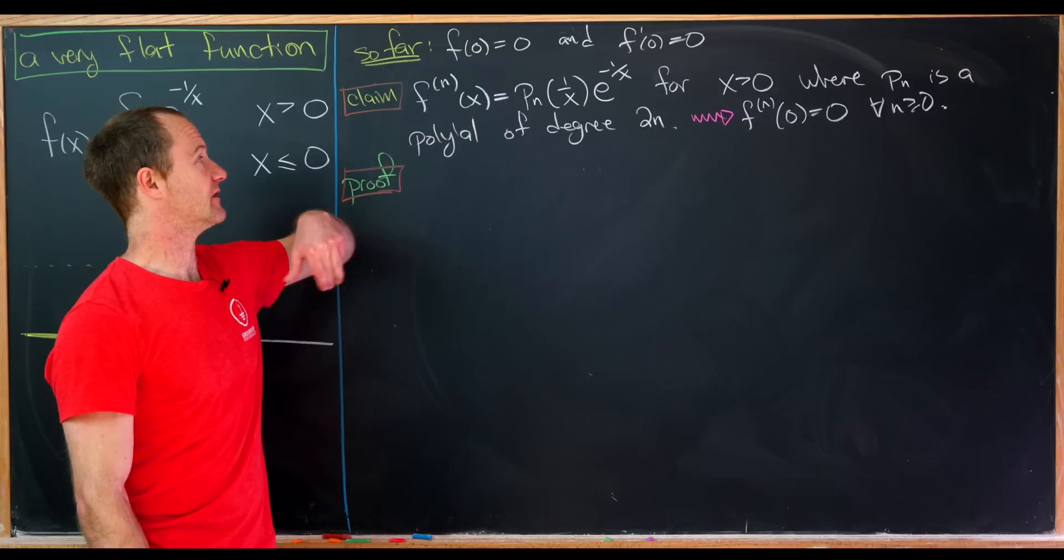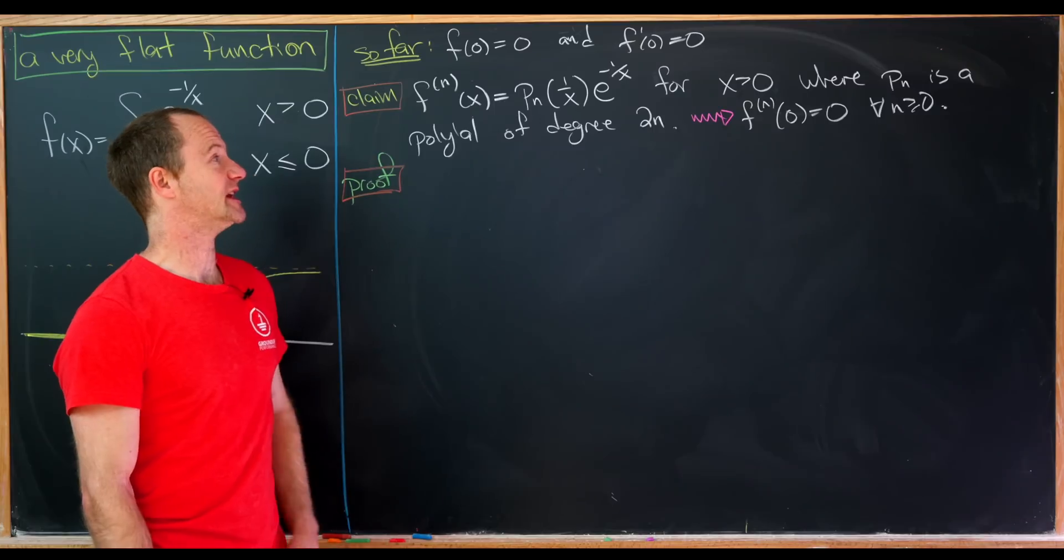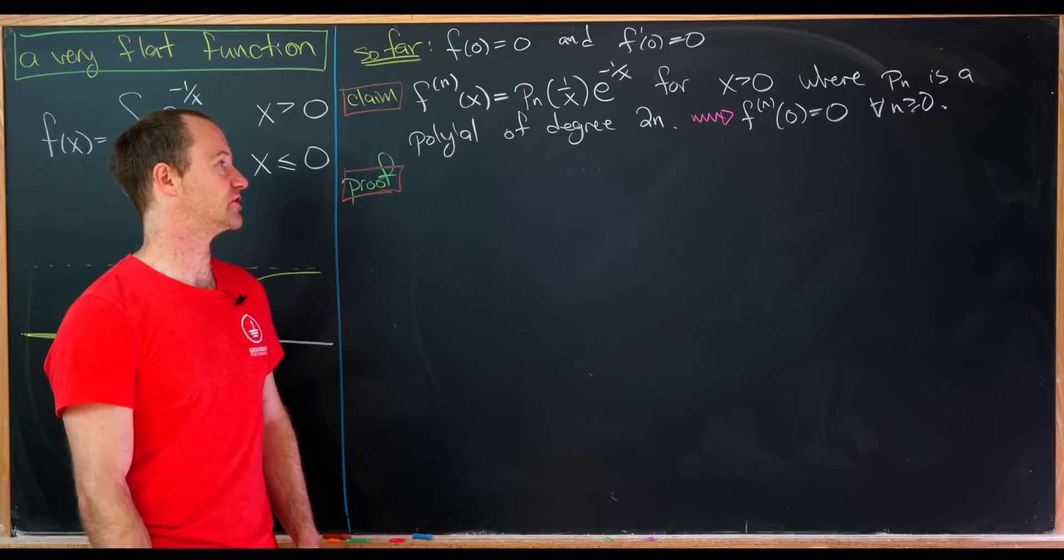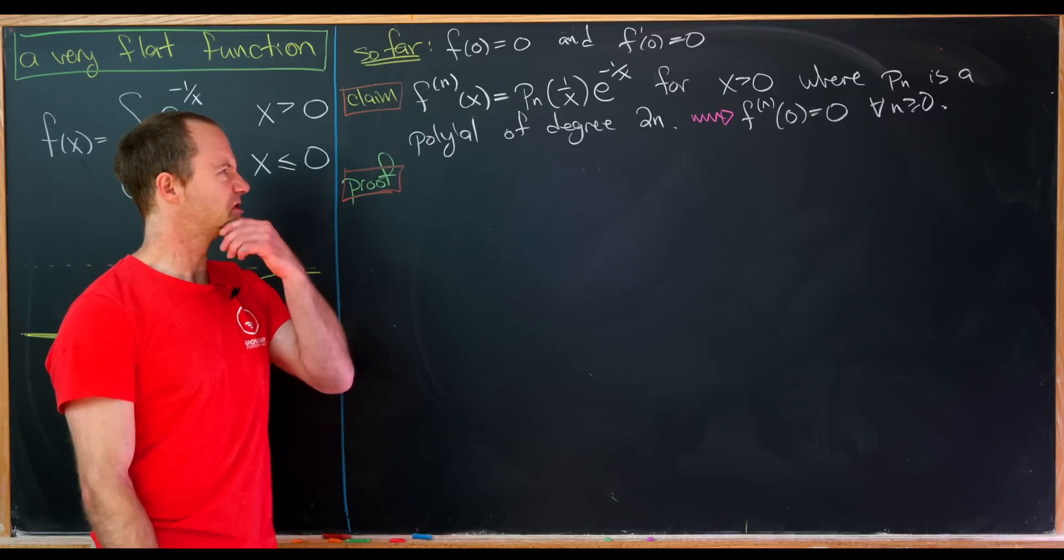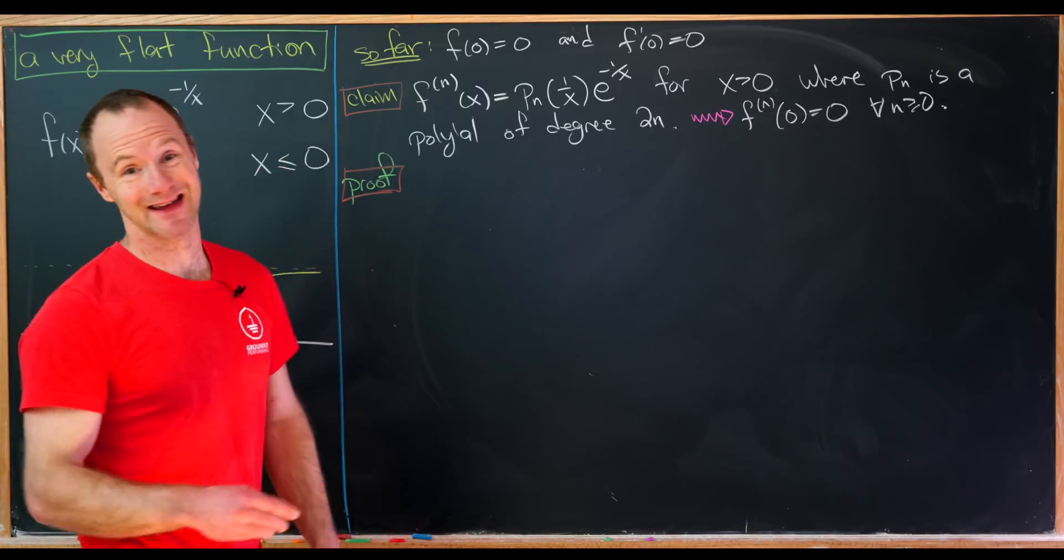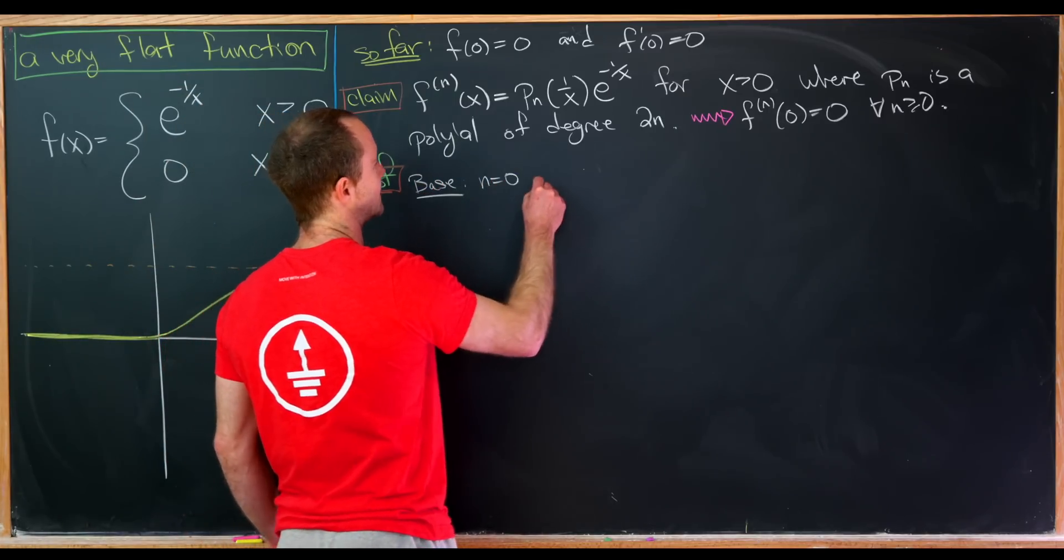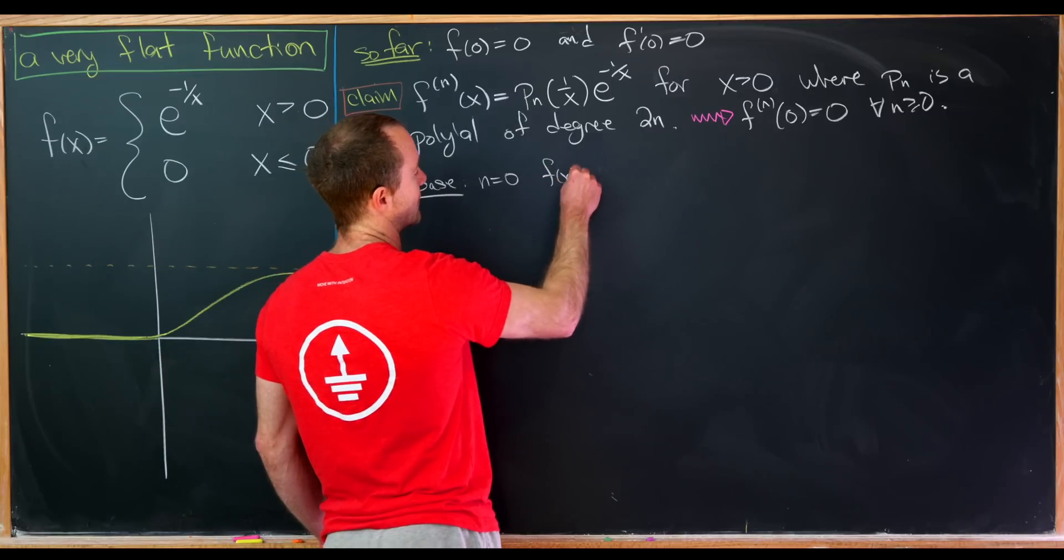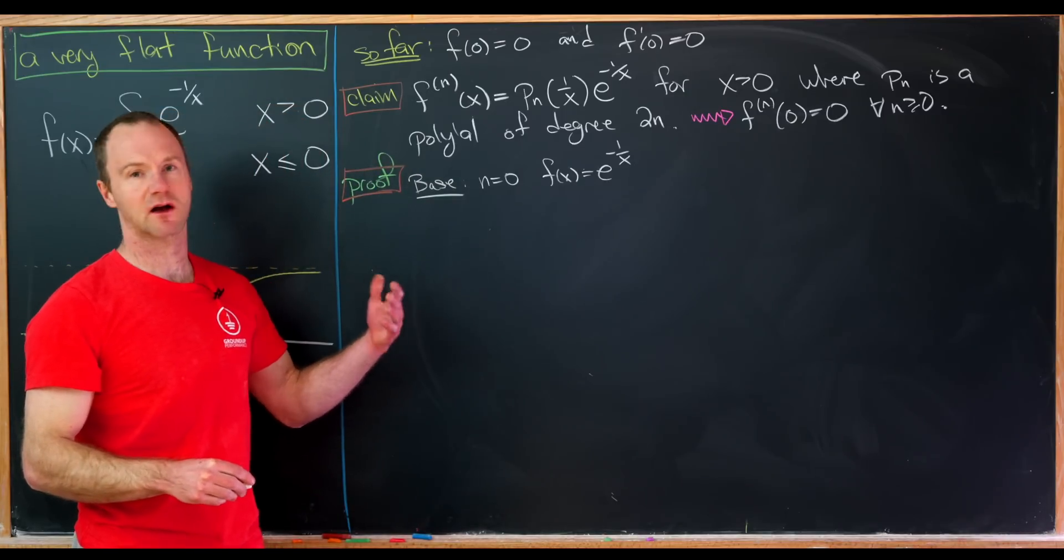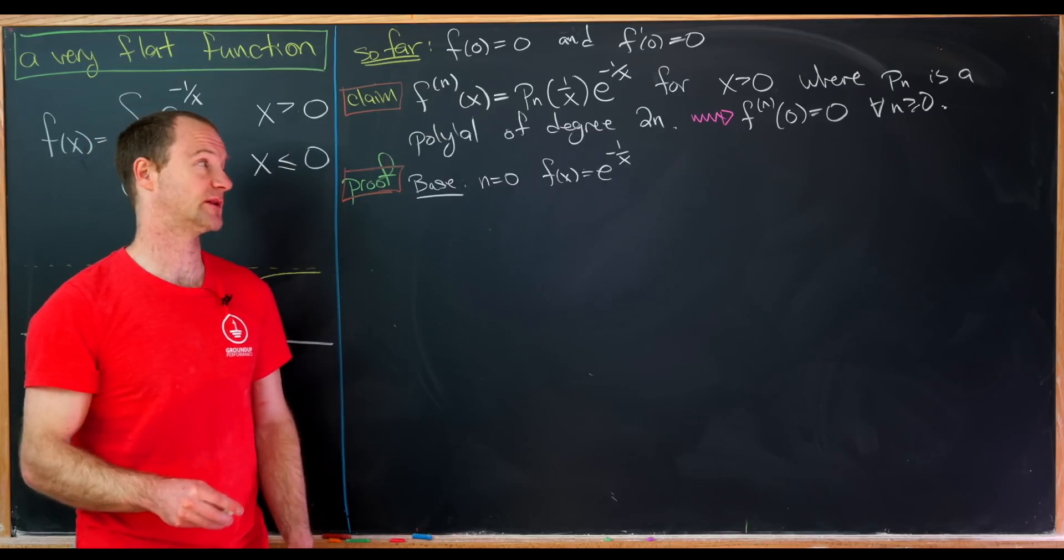Now we're going to prove a somewhat bigger claim, and that is for x larger than 0, the nth derivative of f is equal to p of n evaluated at 1 over x times e to the minus 1 over x, where p of n is some sort of polynomial of degree 2n. So let's maybe see how this goes. So let's prove this maybe by induction. So notice our base case is essentially done. Notice the n equals 0 case is the 0th derivative, which is just e to the minus 1 over x. But that means we're multiplying by a constant, but multiplying by a constant is a polynomial of degree 2 times 0, which is 0.